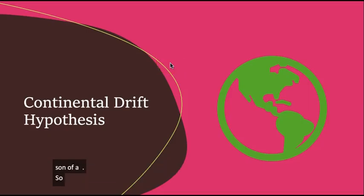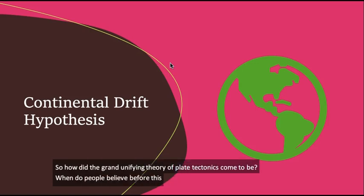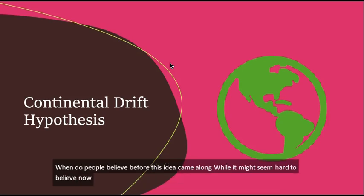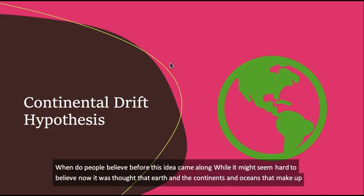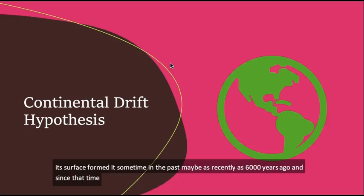So how did the grand unifying theory of plate tectonics come to be? What did people believe before this idea came along? While it might seem hard to believe now, it was thought that Earth and the continents and oceans that make up its surface formed at some time in the past, maybe as recently as 6,000 years ago, and since that time have remained relatively unchanged.